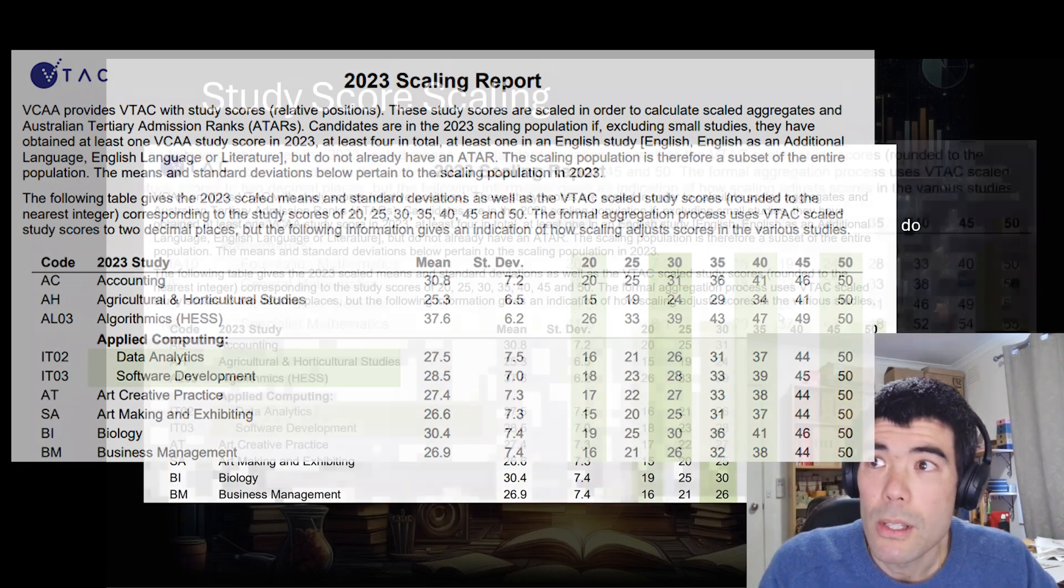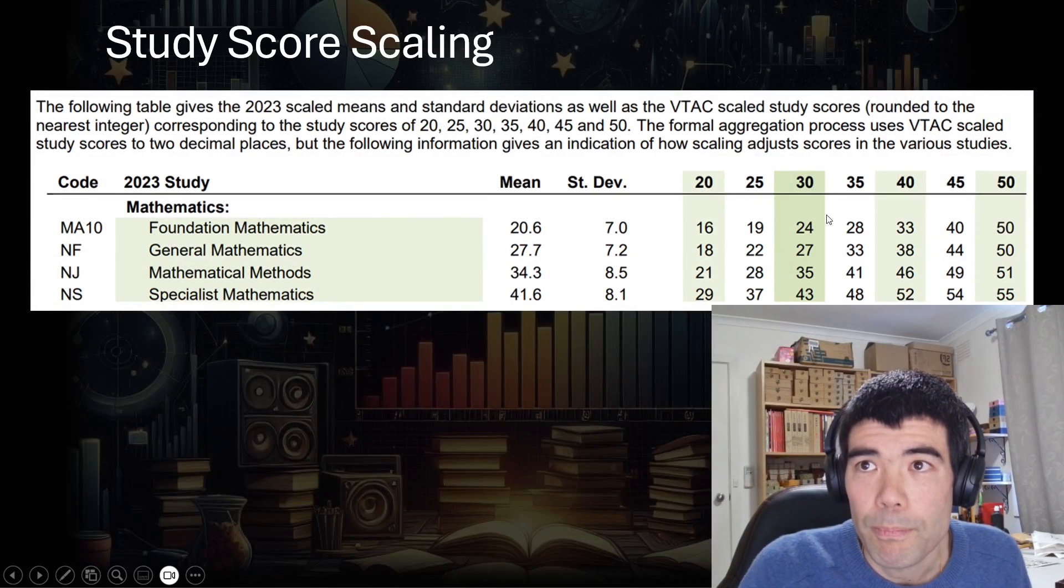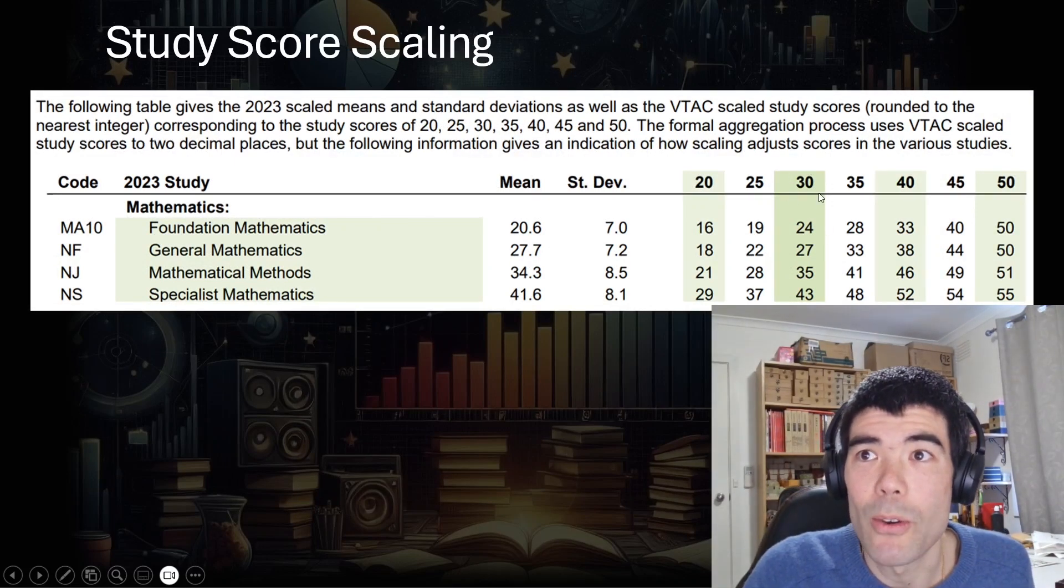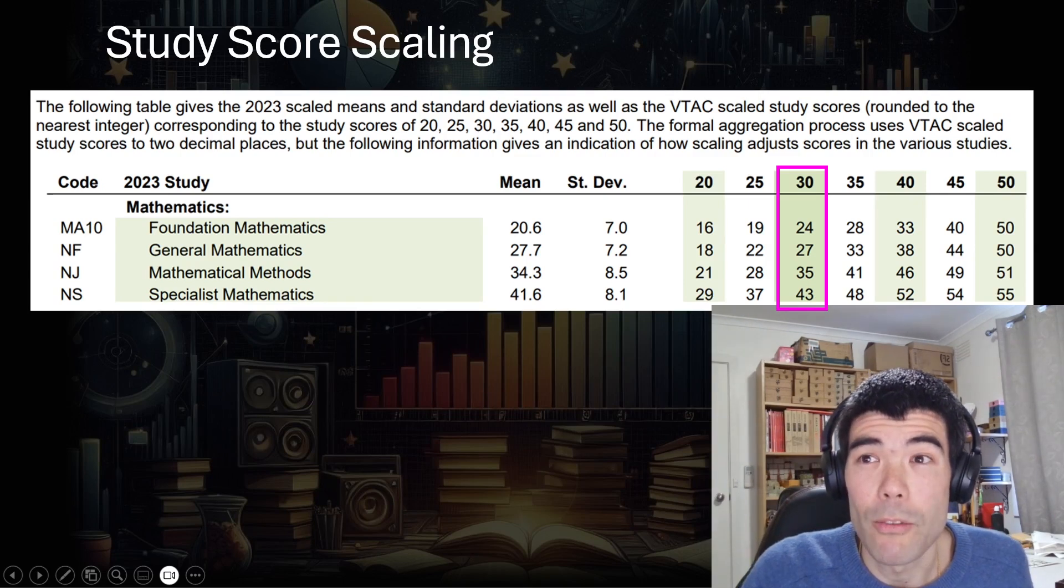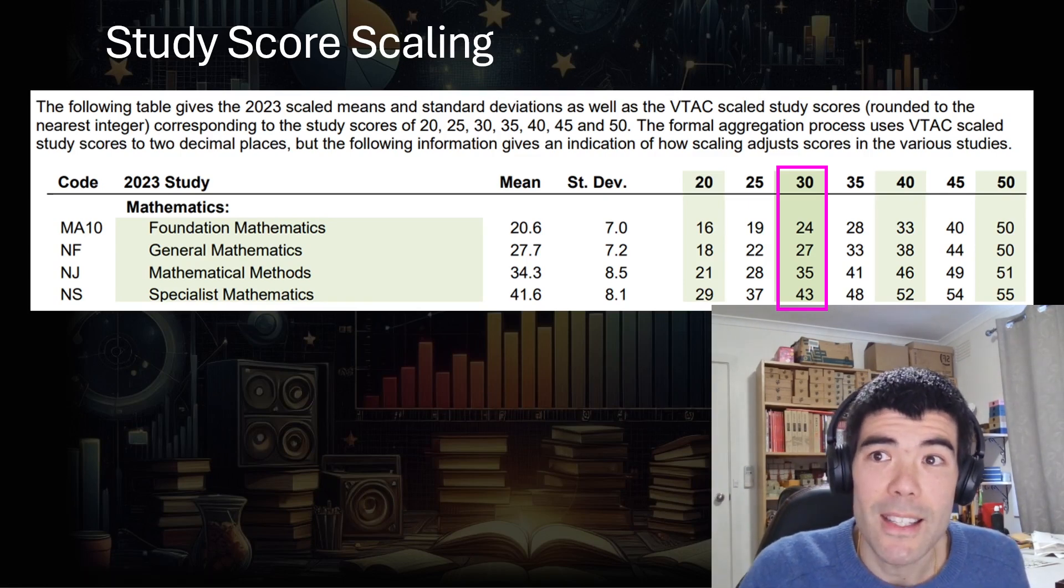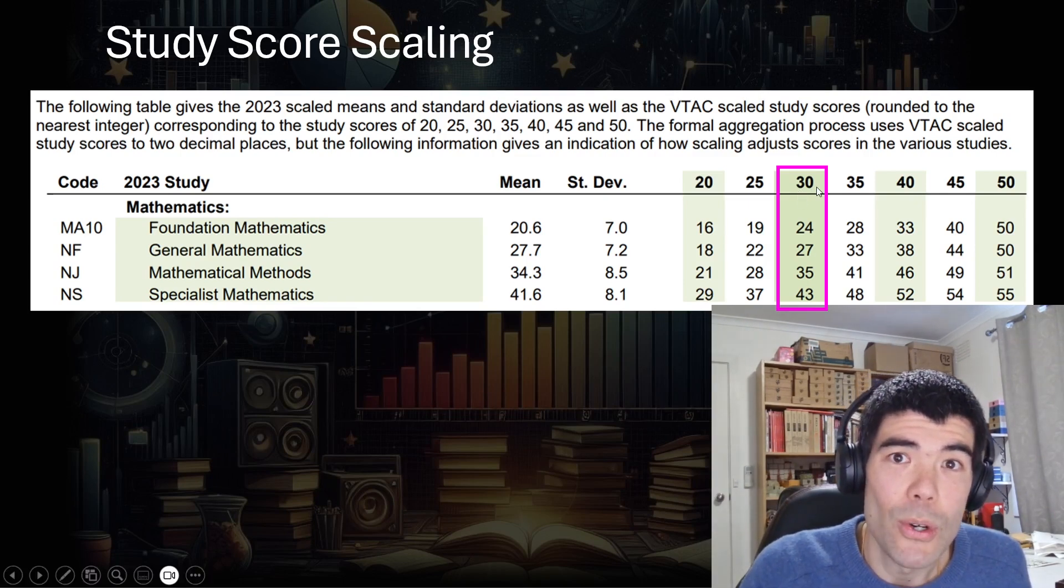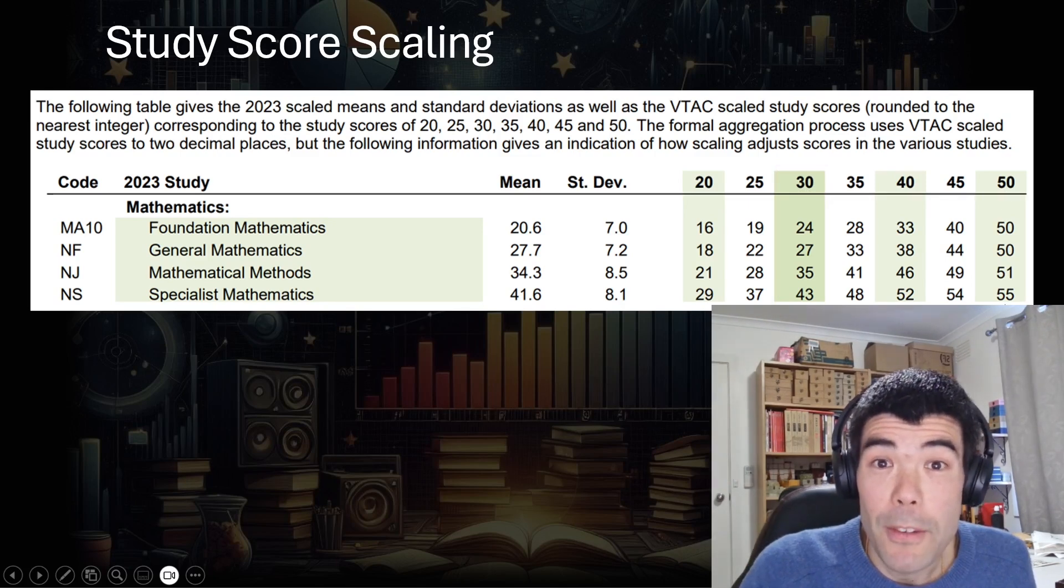But there are some exceptions. If you look at the mathematics, and I always like to talk about specialist mathematics, so raw 30 went up to 43 last year, which is really quite amazing. But it reflects how difficult it is to get that average score among all the specialist math students. 50 went up to 55. So that's generally happened for the last few years.